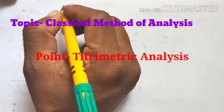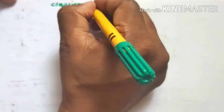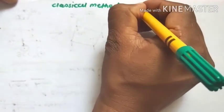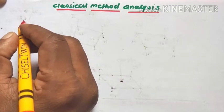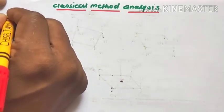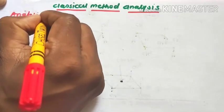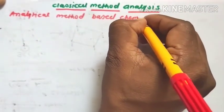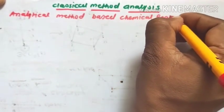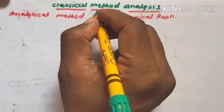Hi friends, today we are going to discuss the new point from unit two, that is the classical method of analysis. In the classical method of analysis, the analysis is based on the performance of chemical reactions — that is, analytical methods based on chemical reactions. This is known as the classical method of analysis, also known as wet analysis.